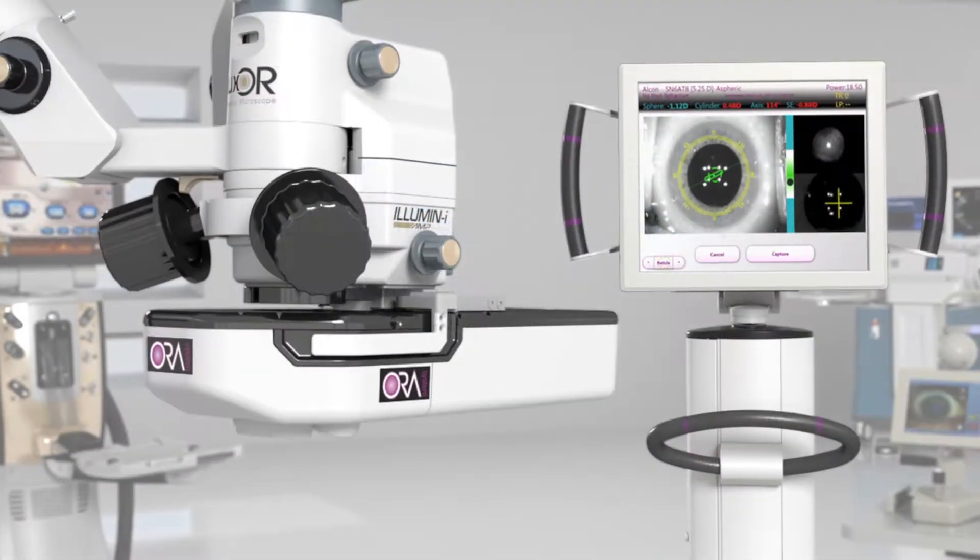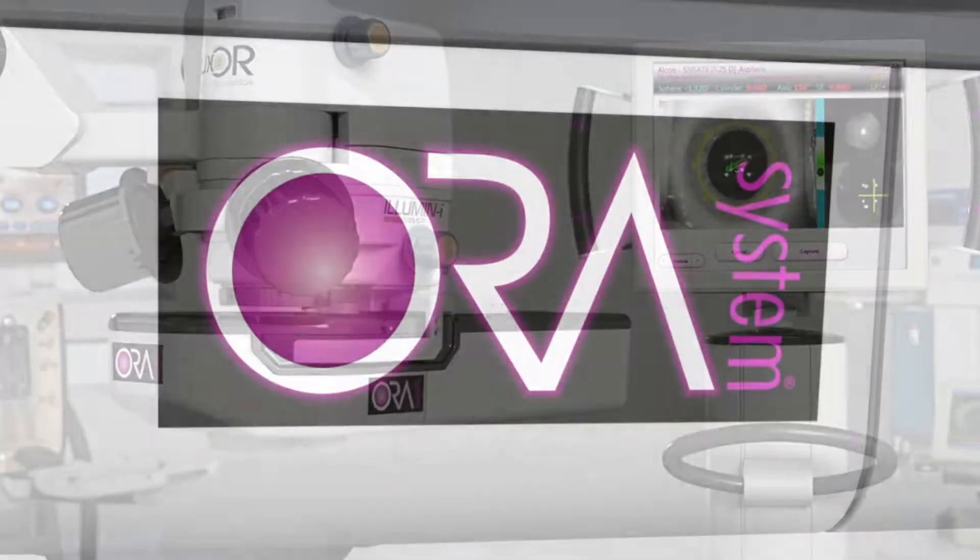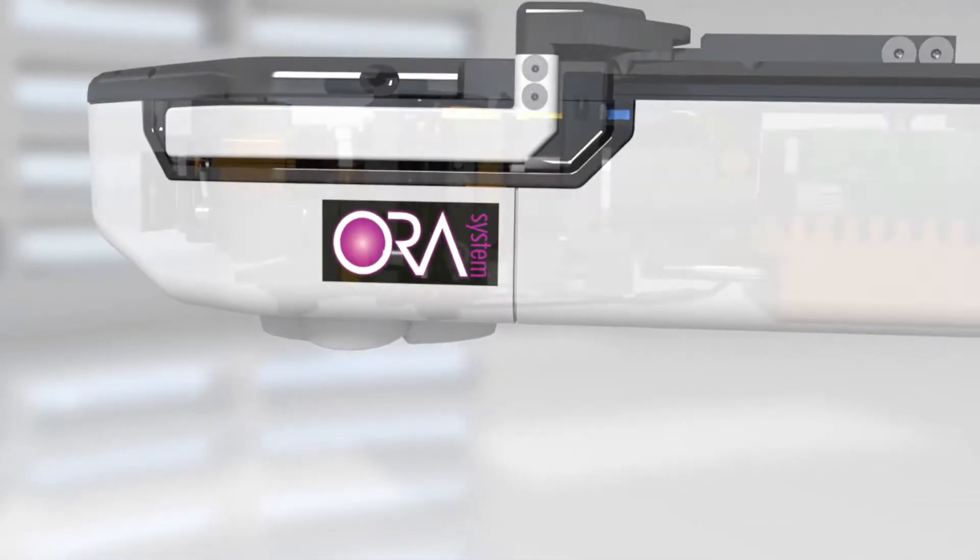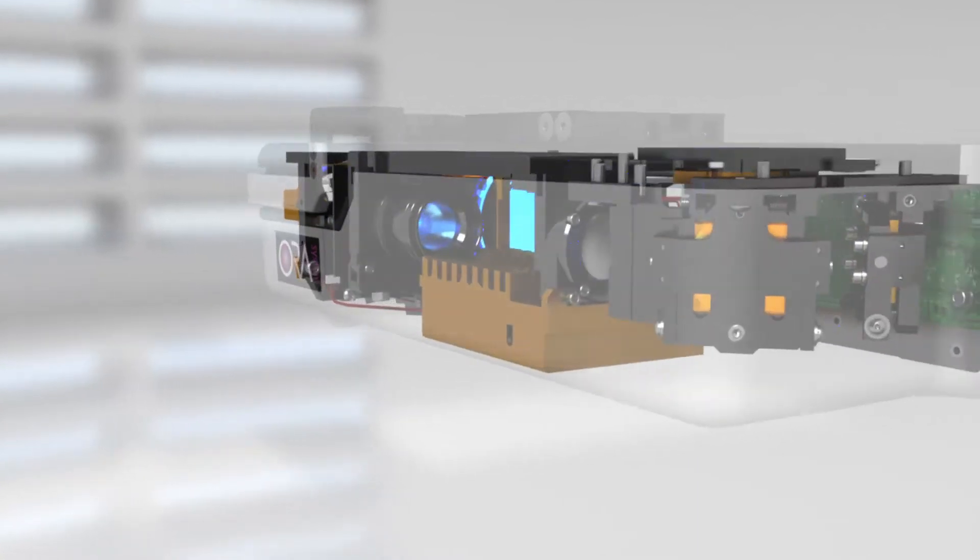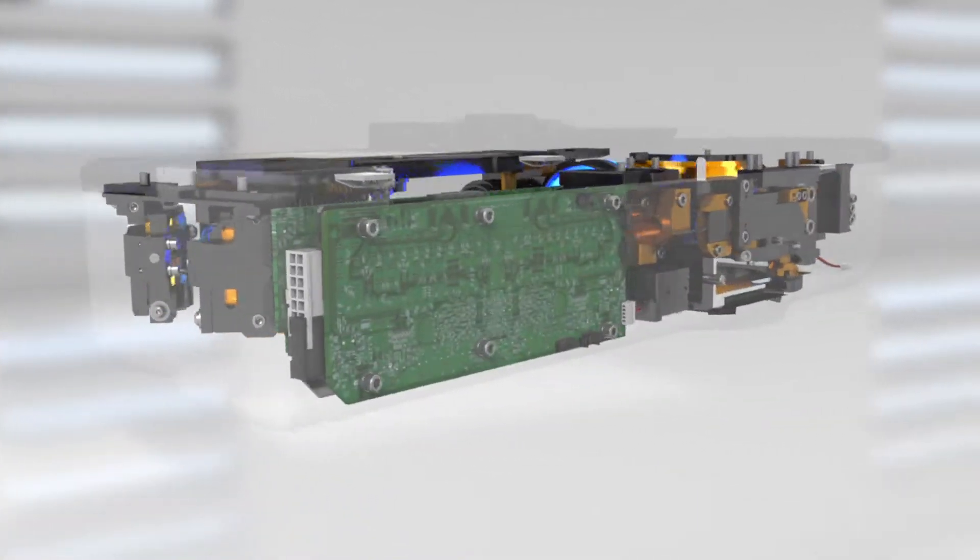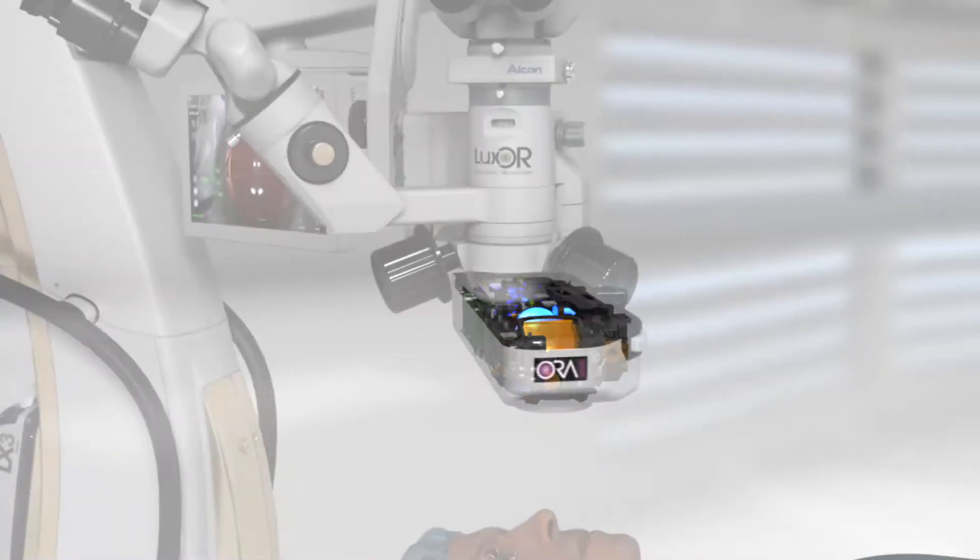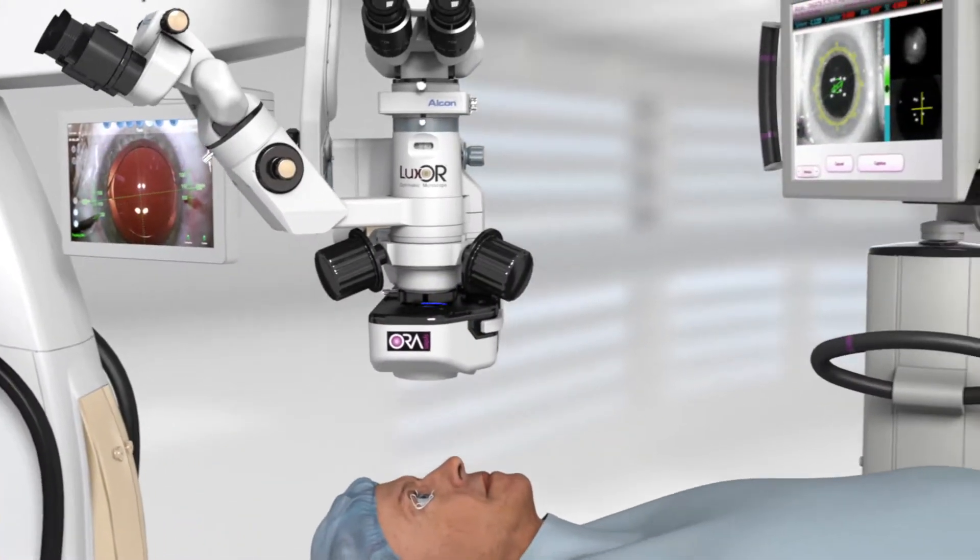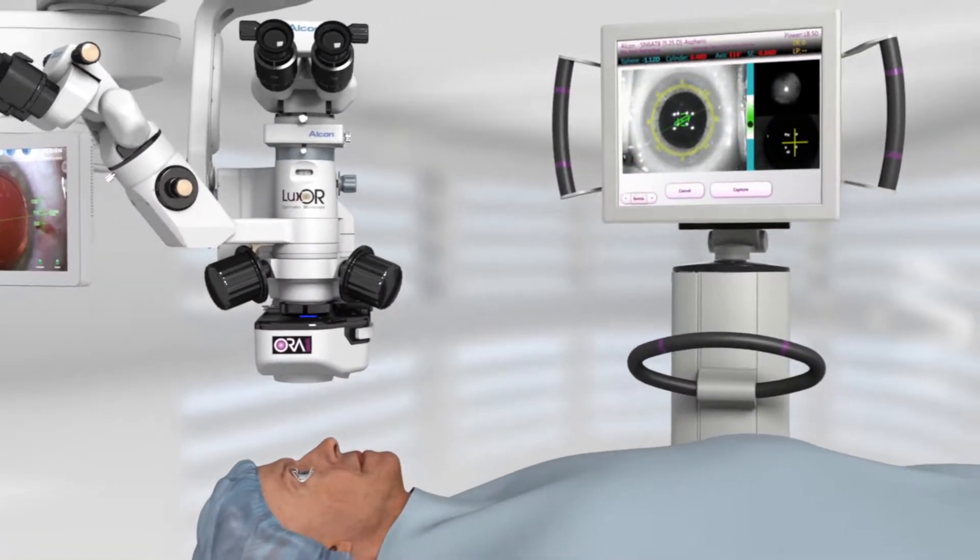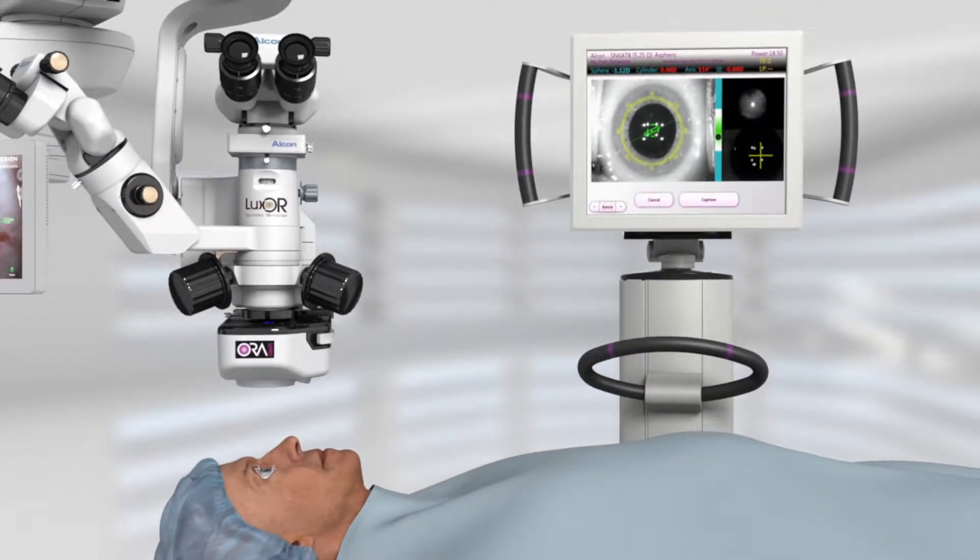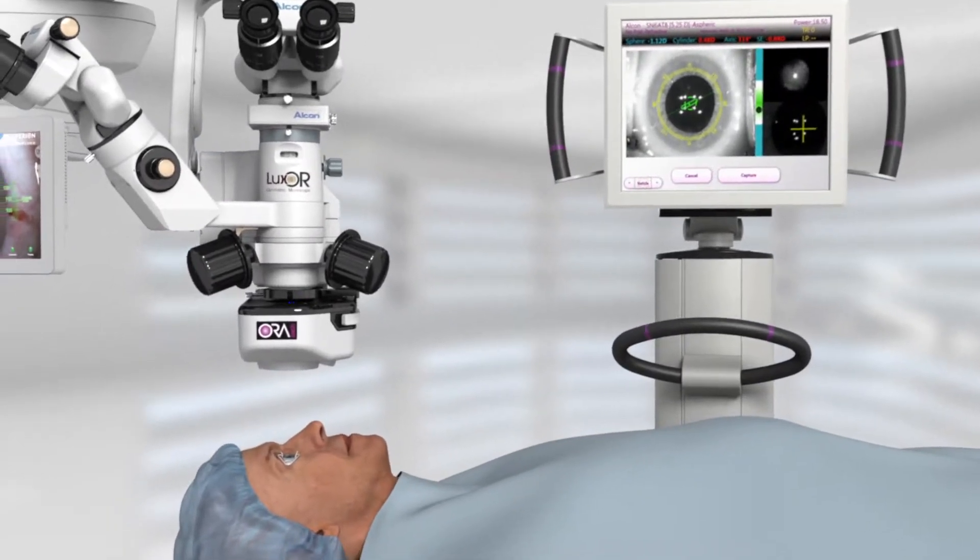The Aura system with Verify Plus technology has been designed for surgeons who demand the most accurate, up-to-date data available. By providing real-time refractive information in the OR, the Aura system with Verify Plus technology helps identify posterior corneal astigmatism and provides additional information that may not have been detected during pre-op analysis.